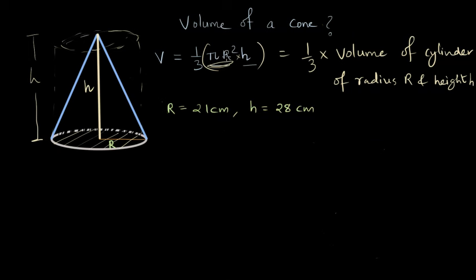We simply will have to plug in these values in the formula of volume of the cone. So volume is given by 1/3 times π times r², which is 21², times h, which is 28. We can use the value 22/7 for π.